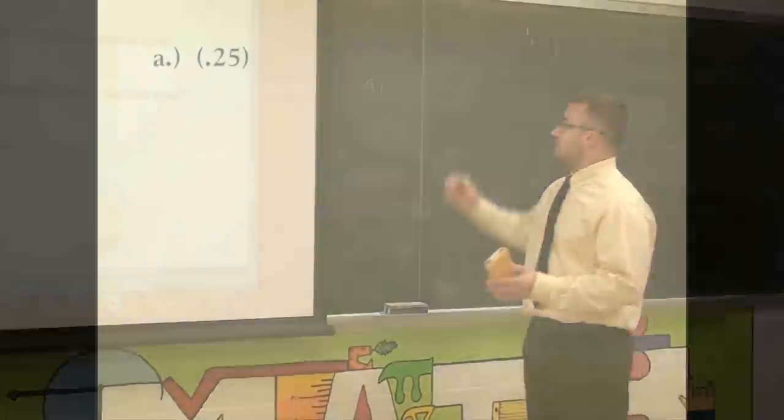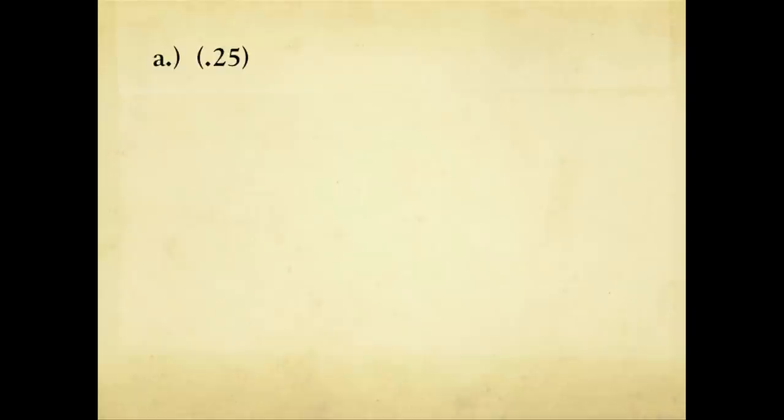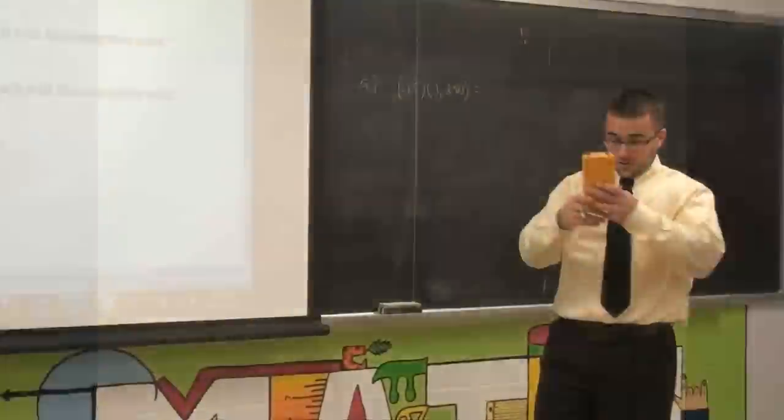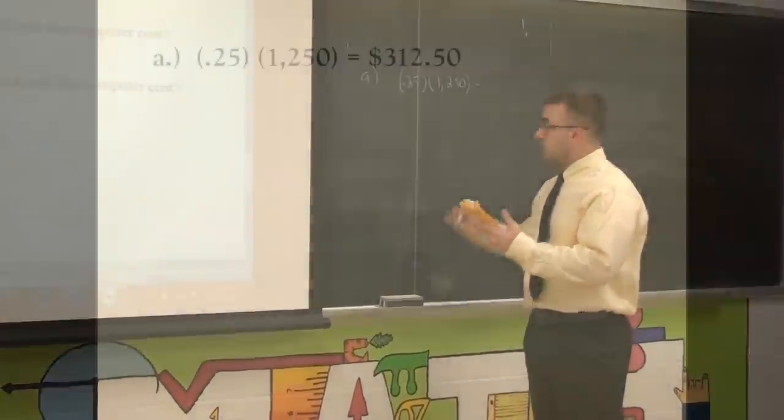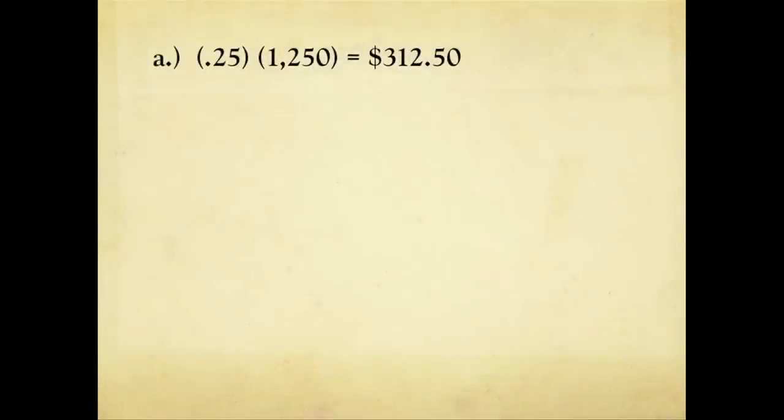Well 25% as a decimal is .25. And since we're talking about Best Buy, we're going to multiply it by $1,250. So using our calculator, $1,250 times .25, we get $312.50.